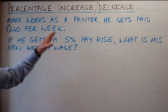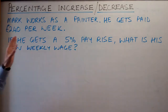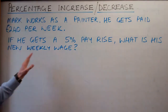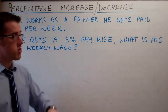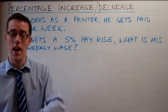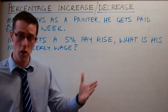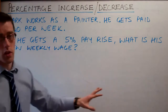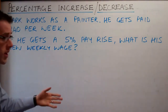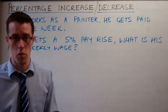If we look at this one, it says Mark works as a painter and he gets paid £240 per week. If he gets a 5% pay rise, what is his new weekly wage? You have to work out what 5% of £240 is, and since it's a wage rise, it will be added on to his wage.